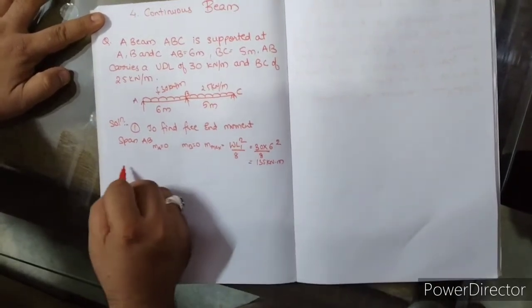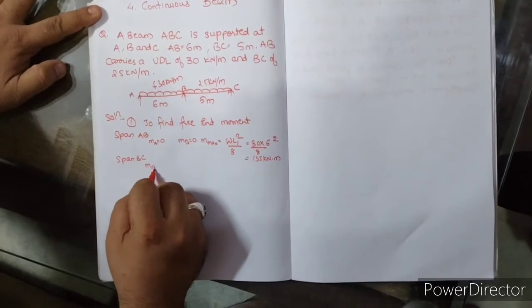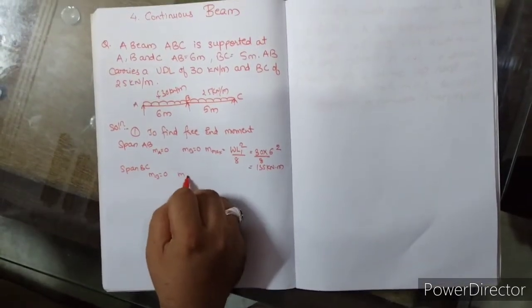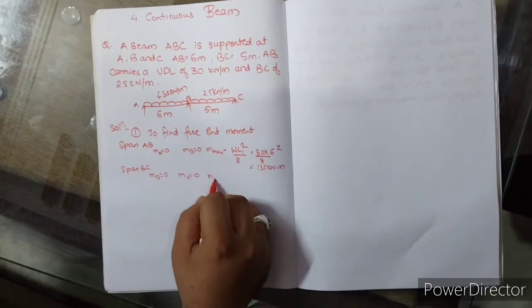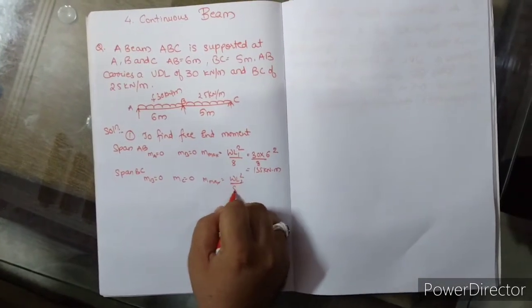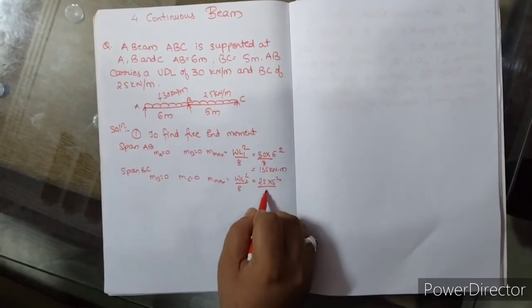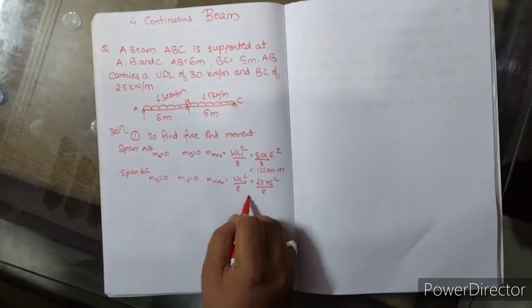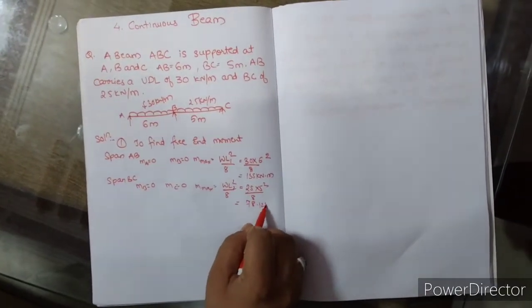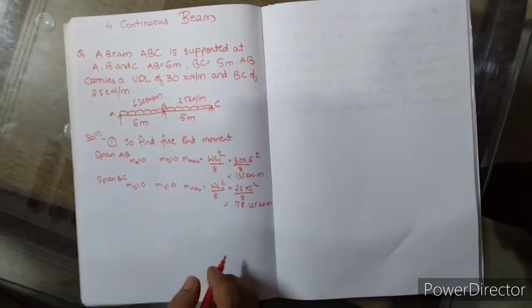Second: same जाएंगे span BC के लिए. M of B is equal to 0, M of C is equal to 0. M max is equal to — UDL है, formula है WL2 square by 8. 25 into 5 square upon 8. Answer है 78.125 kN·m.